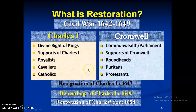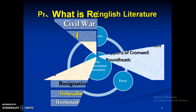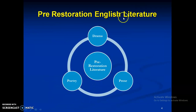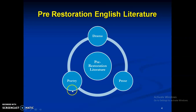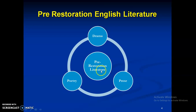Now, pre-restoration English literature has three segments: drama, poetry, and prose. But in today's video lecture I will just talk about drama, and then in the next lecture I will talk about prose and then poetry. There are two types of school related to pre-restoration drama: the old school and a satiric group — dramatists who were exercising satire as a technique. In the old school we have Dekker, Heywood, Webster, Rowley, and Fletcher.